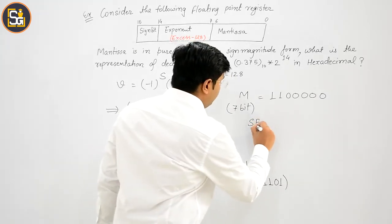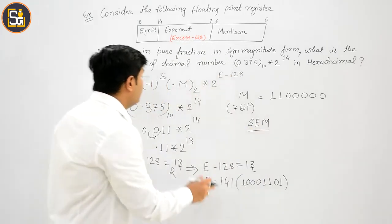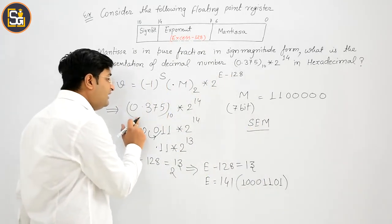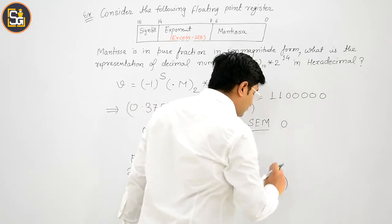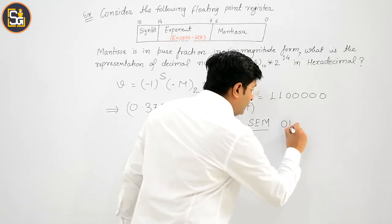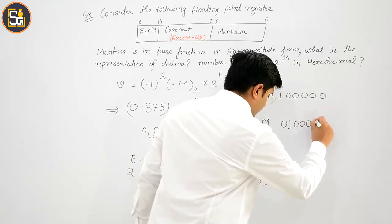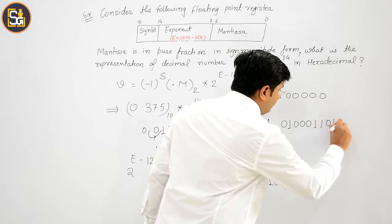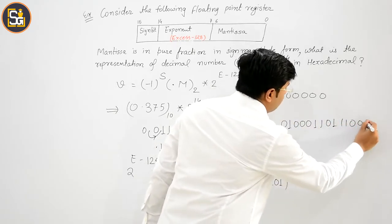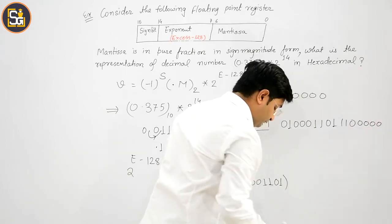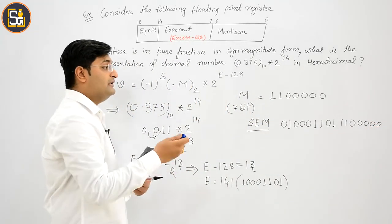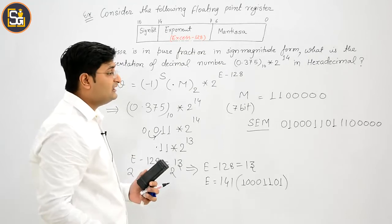Now, S, E, M. आपको हमेशा याद रखना था, number positive है, that's why 0. What is E - 1, triple 0, 1, 1, 0, 1 and 1. M is 1, 0, 0, 0, 0, 0. Clear है.